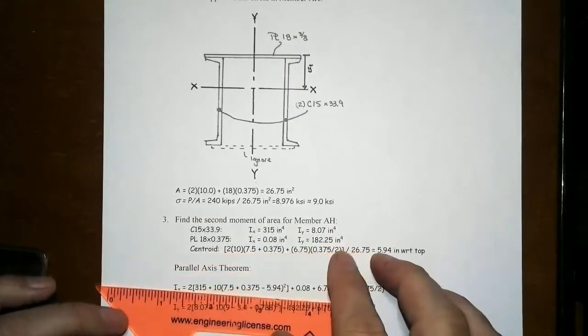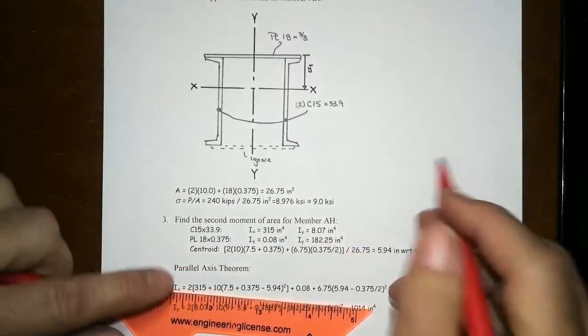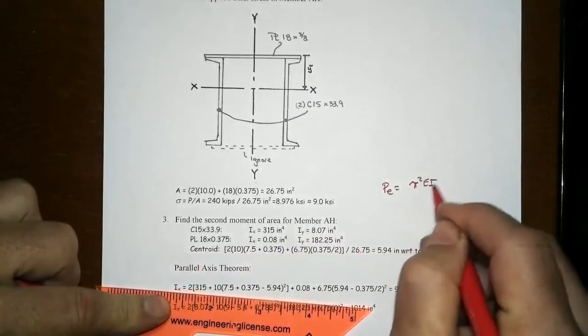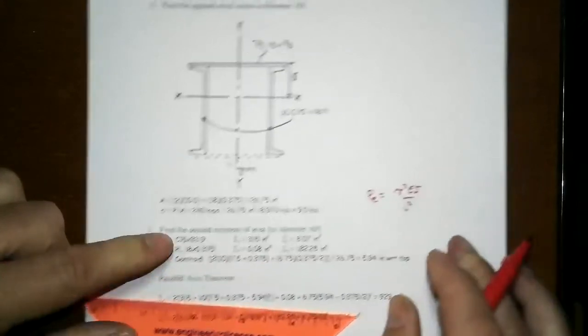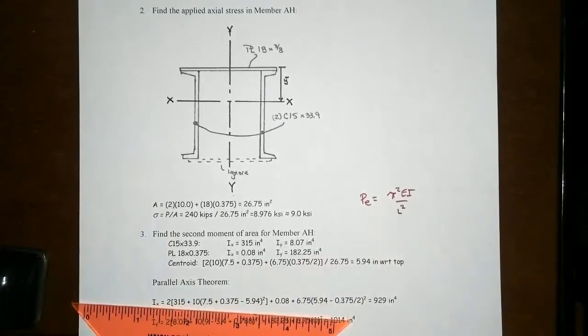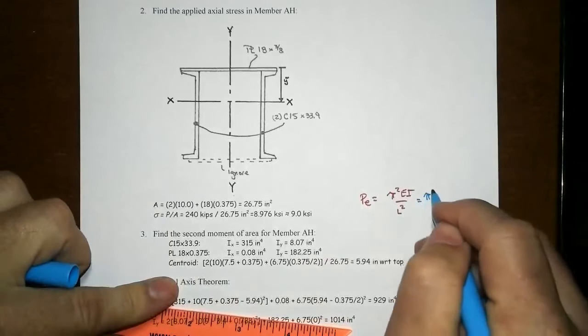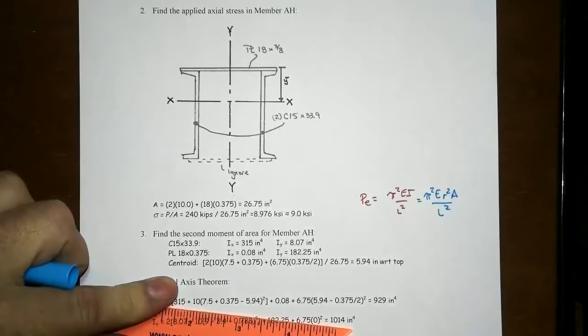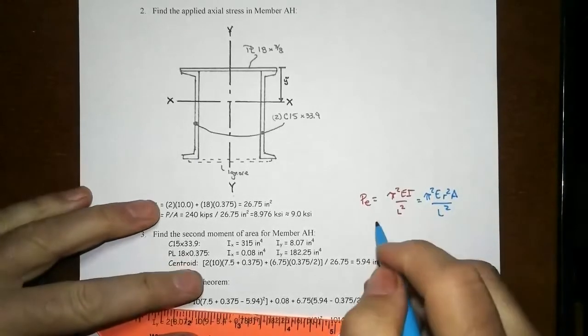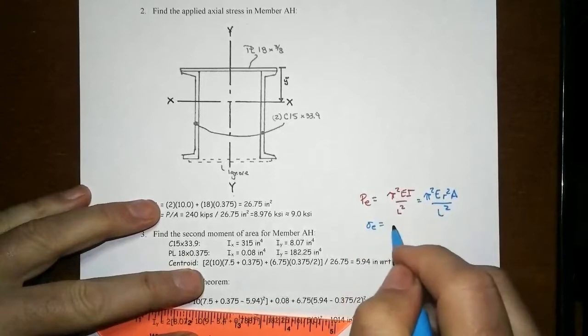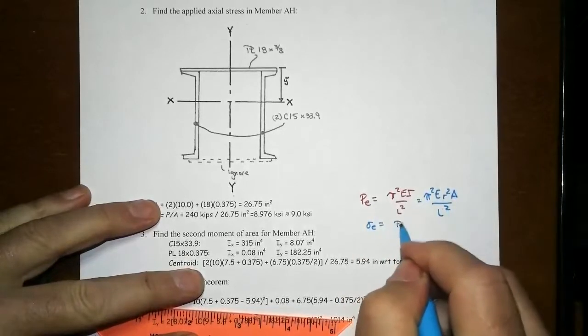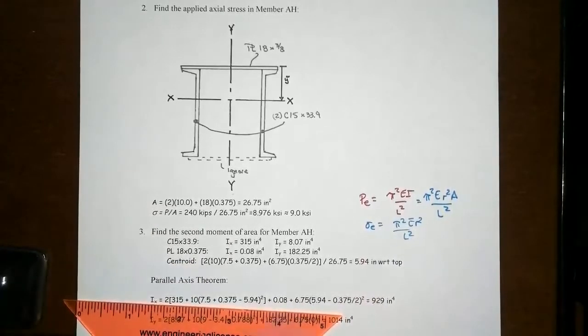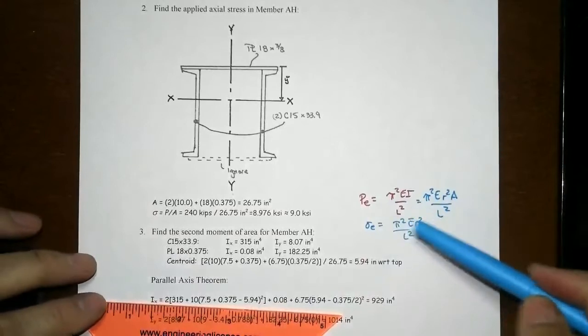For the Euler load, that's going to be our P_E = π²EI/L². Or if we do that in terms of the radius of gyration, that would be expressed as π²Er²A/L². If we want the Euler stress, that would be σ_E = P_E/A, which is just π²Er²/L²—just another way to manipulate and work with these critical expressions.